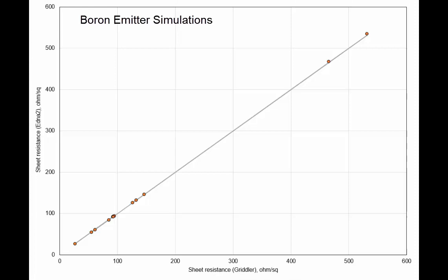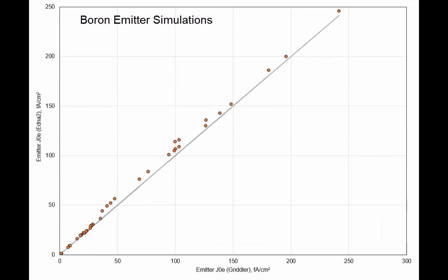We also repeated the same exercise for 16 boron profiles, some of which were both simulated by Aetna and Gridler PC1D. Here's the comparison of sheet resistance. Again, the agreement is excellent. Well, under 1% fractional deviation between the two sets.